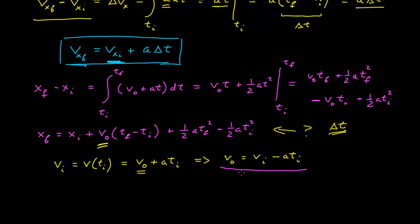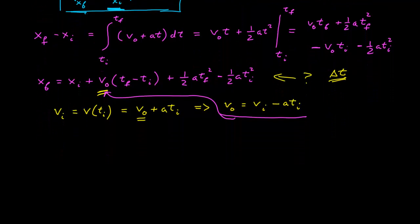And now I can plug this into v naught here to be able to remove it from my expression. So this gives me x final equals x initial plus now v i minus a t i times t f minus t i.